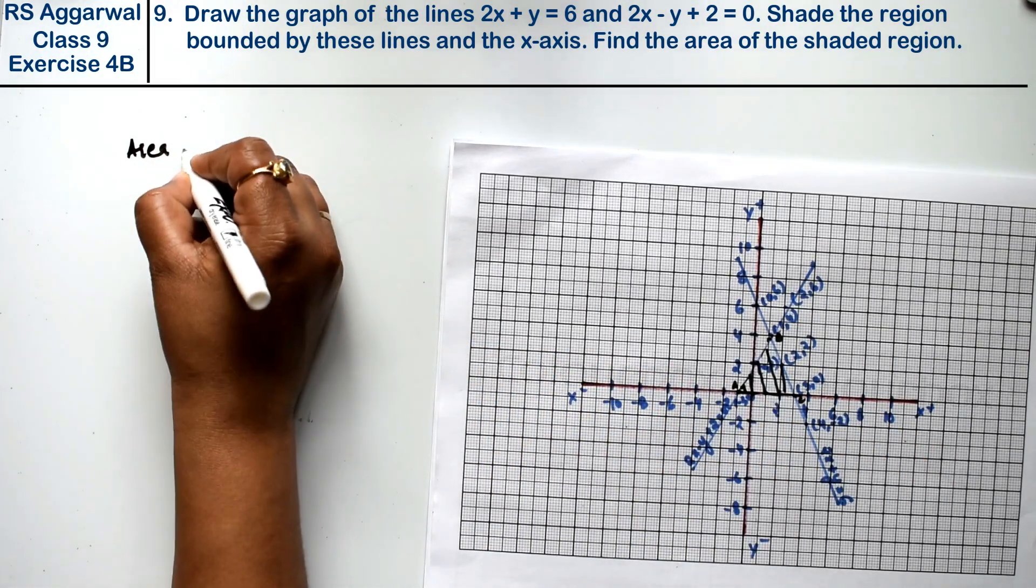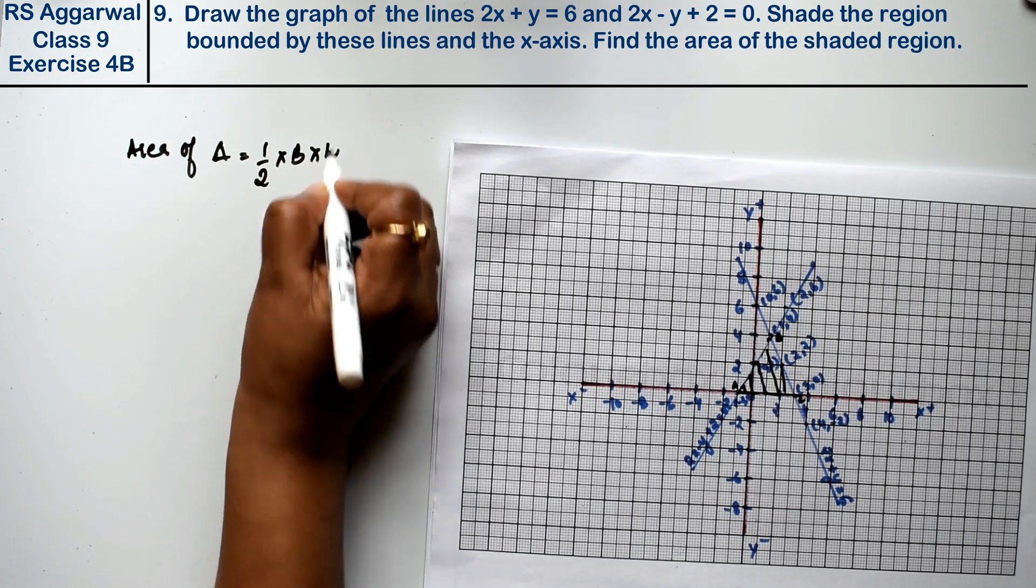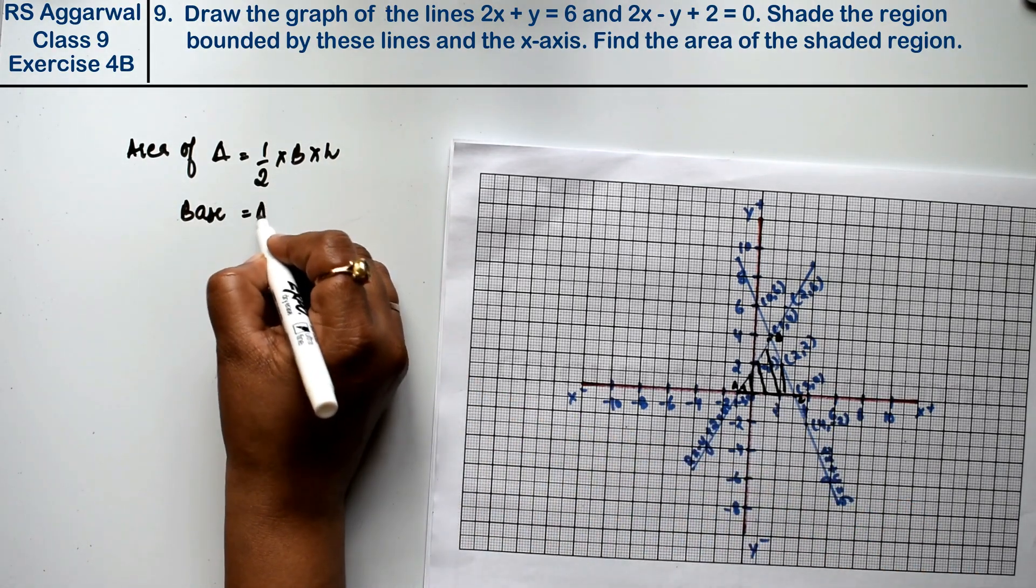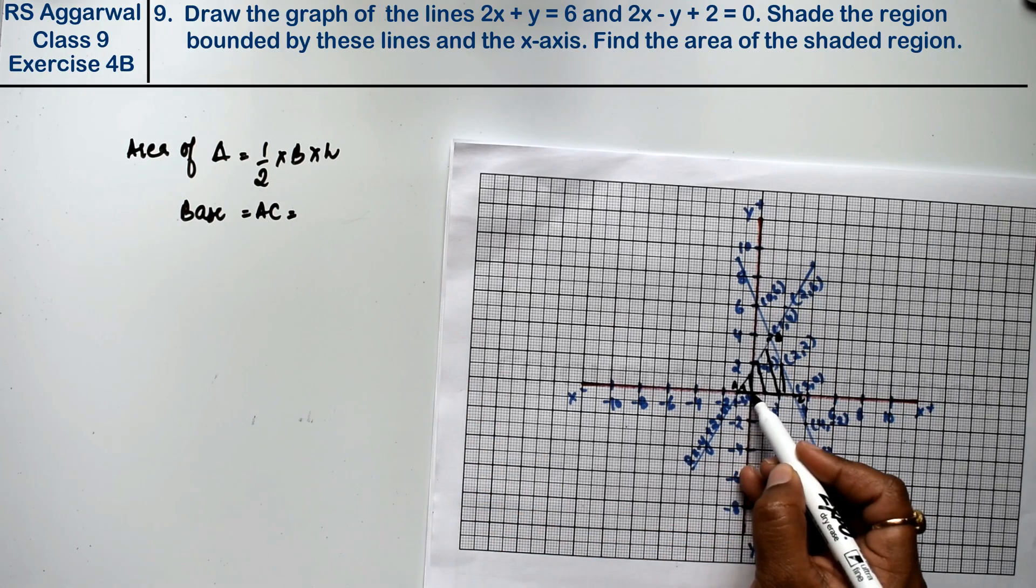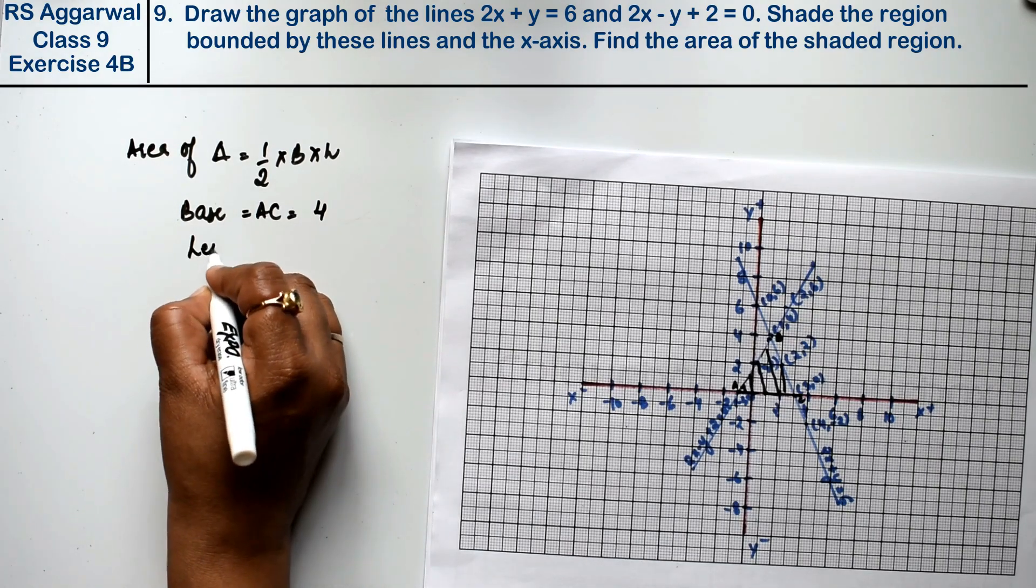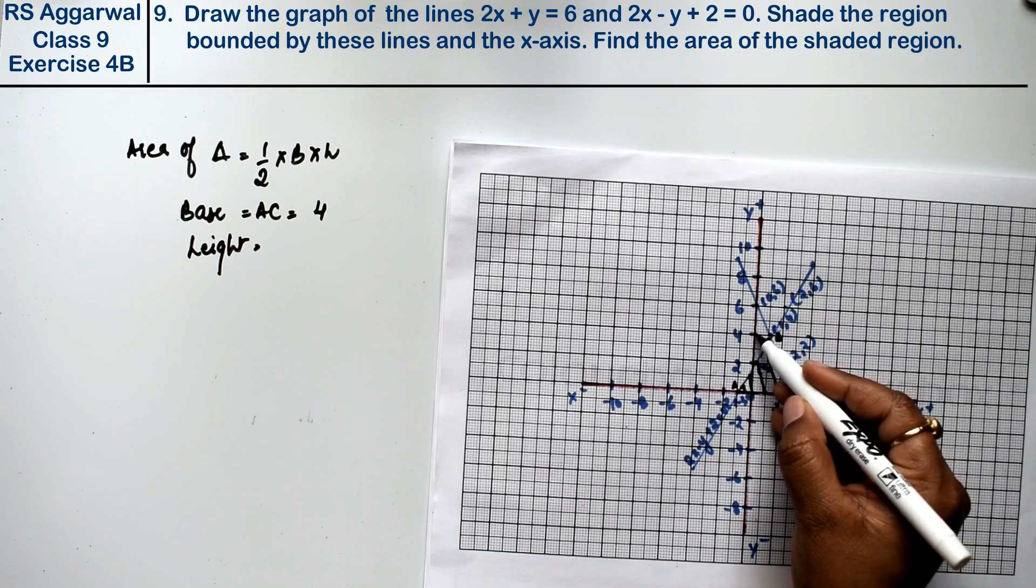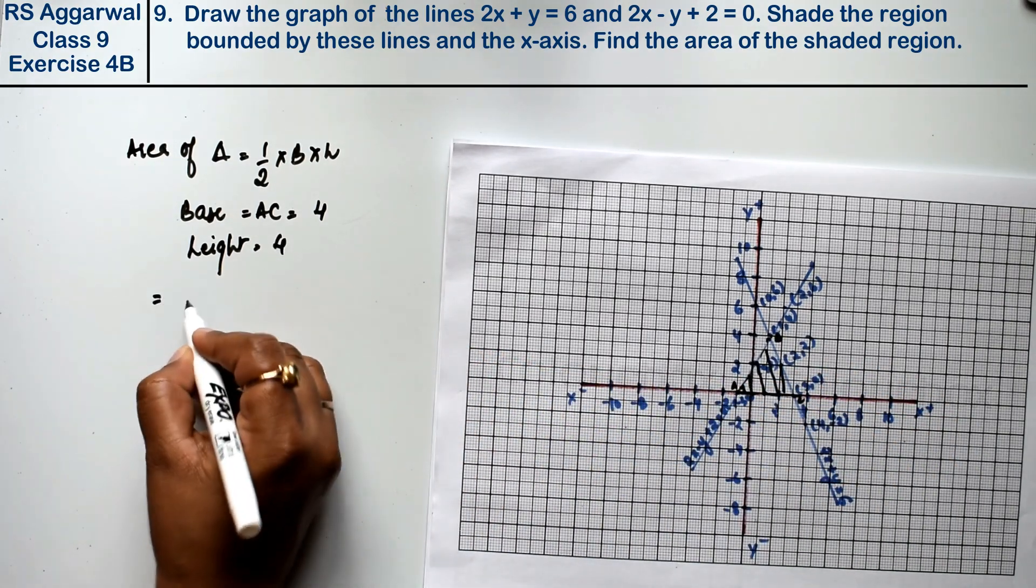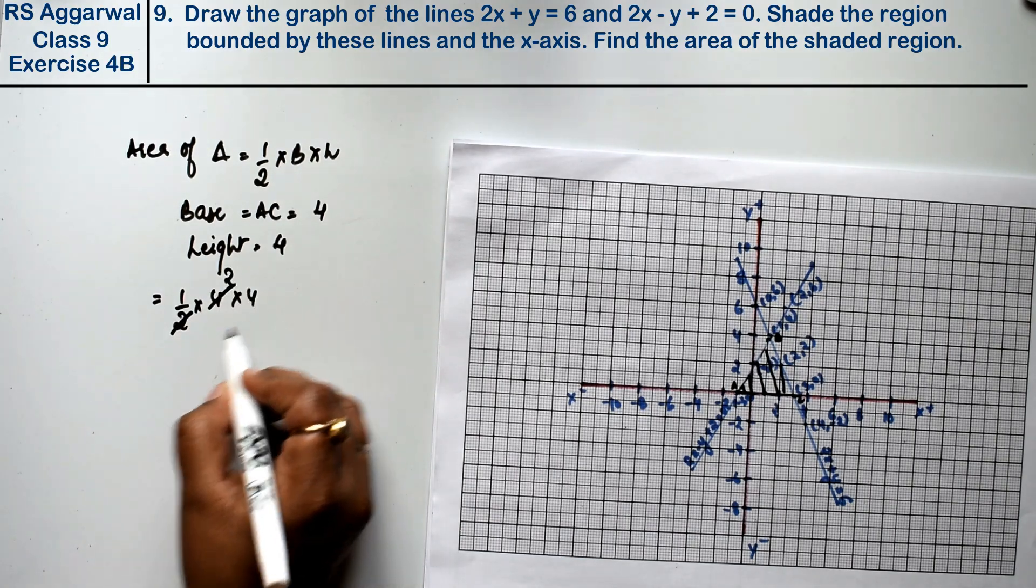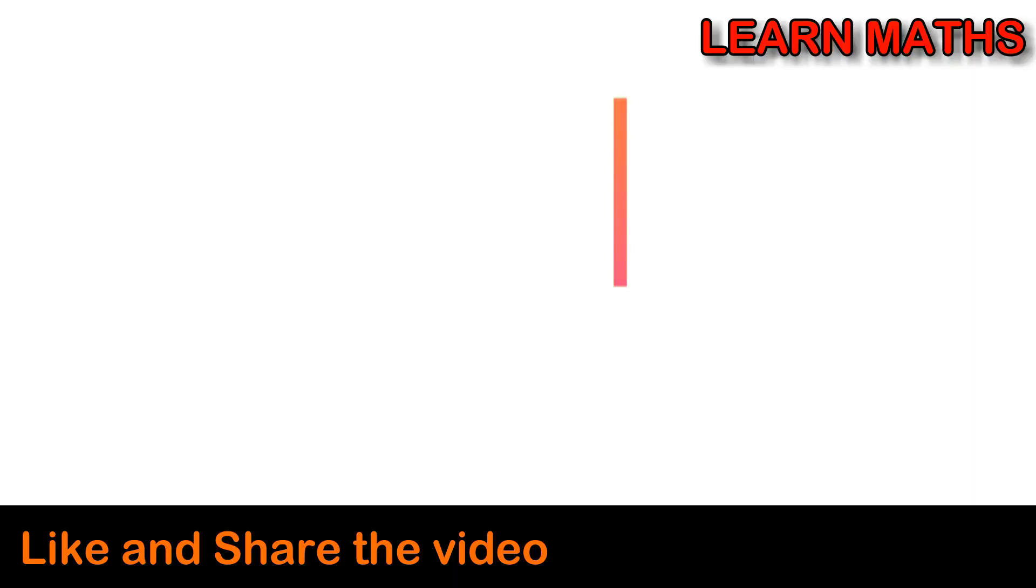Area of triangle is half into base into height. The base is AC. AC is how much? Look here: 1, 2, 3, and 4. And how much is height? Look, this is maximum height, so this is 4. So how much is this? Half into 4 into 4. That is 8 square units is the answer. Thank you.